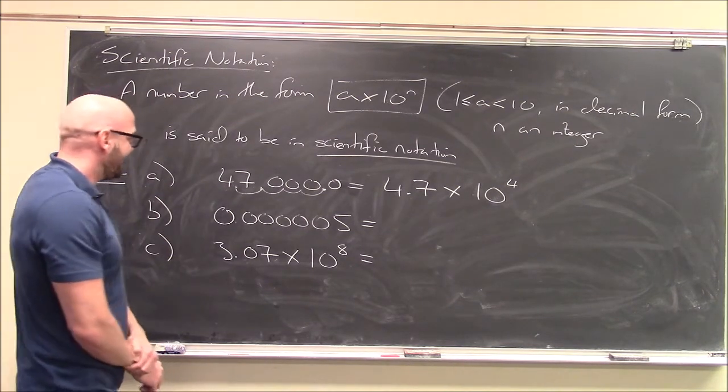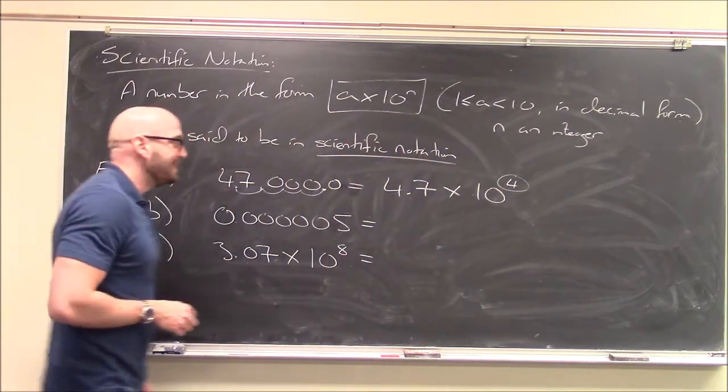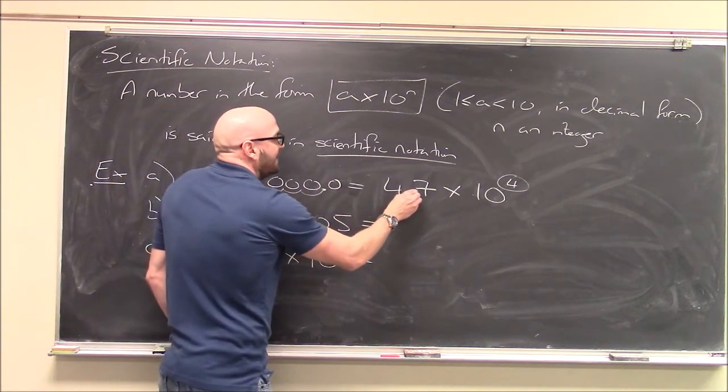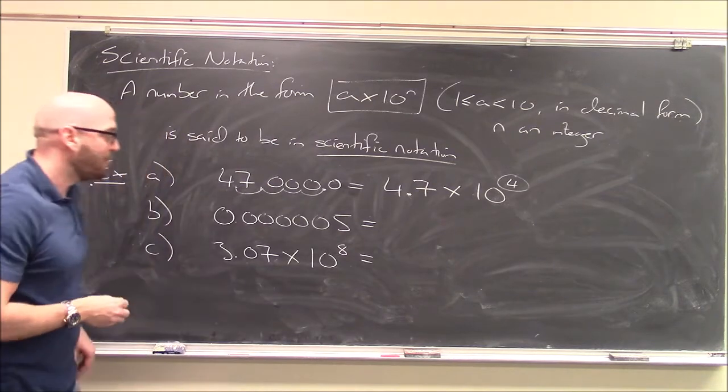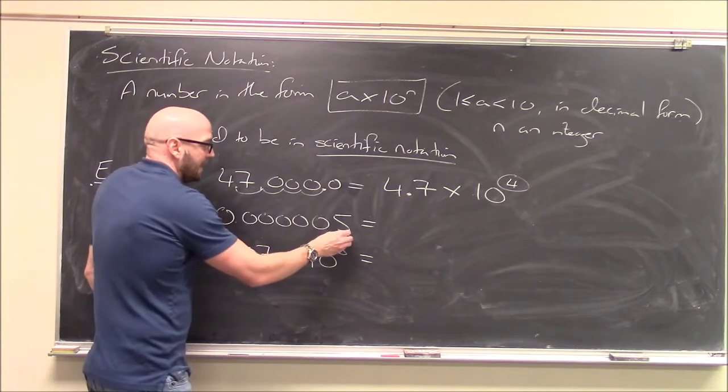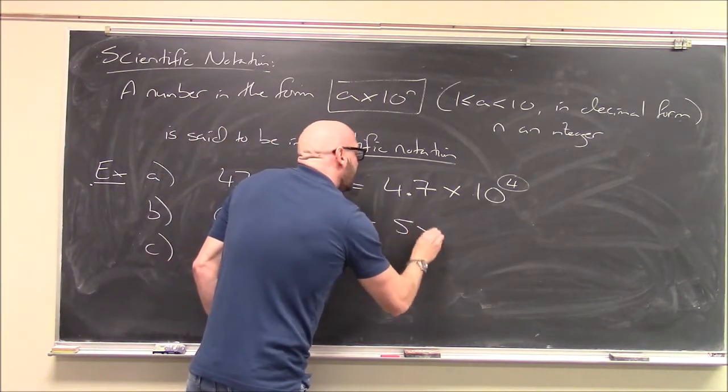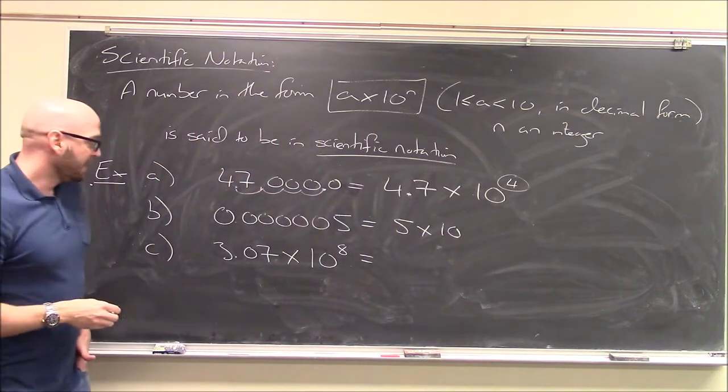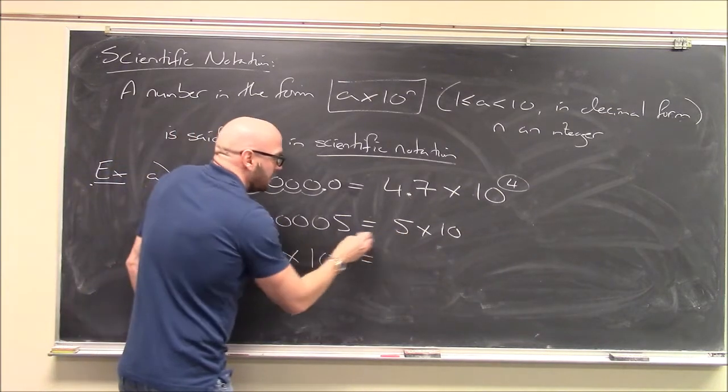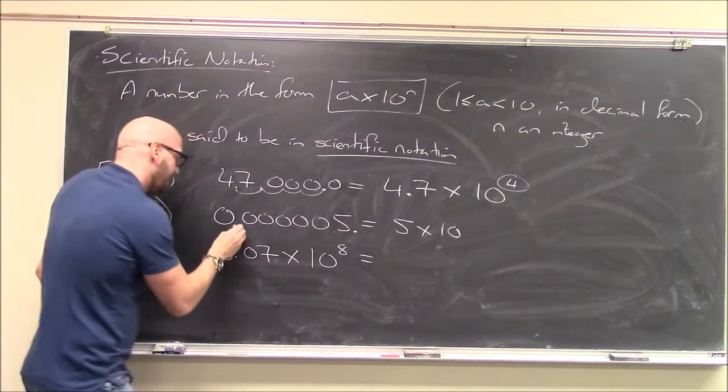So this is how you get this integer here. You just think, how many places do I have to move my decimal point to get it to where I want? 4.7. So similarly here, okay, I'm looking at 5 followed by just a string of zeros. So I'm going to write this as 5 times 10 to the something. Where do I want to move my decimal to? Well, I want to move it to here, right? 5.0. So, 5. Let's see. So I start with my decimal here. 1, 2, 3, 4, 5, 6 places.